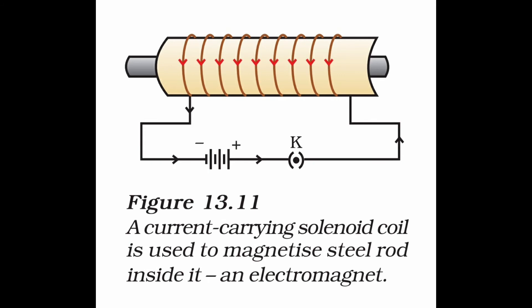A current-carrying solenoid with a soft iron core acts as an electromagnet only as long as electric current flows through it — it loses magnetism when the current is switched off, because soft iron has less retentivity. Advantages include: it gets magnetized and demagnetized quickly with current; its polarity can be changed by reversing the current direction; and its magnetic strength can be varied by changing the current or the number of turns.